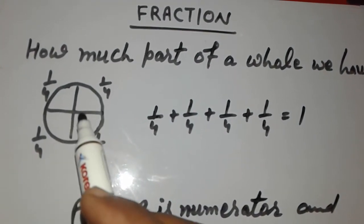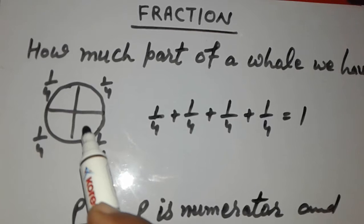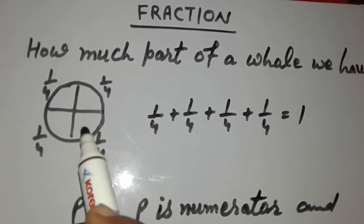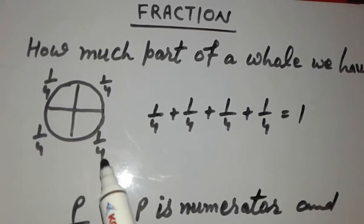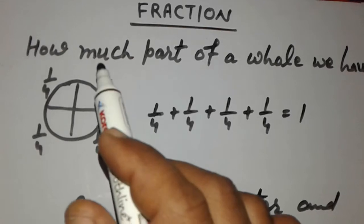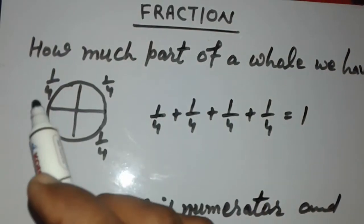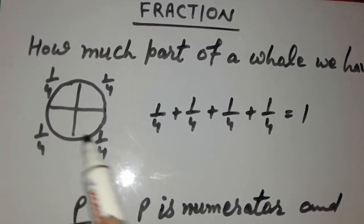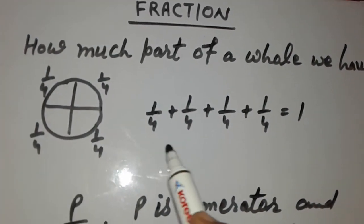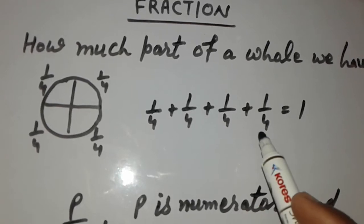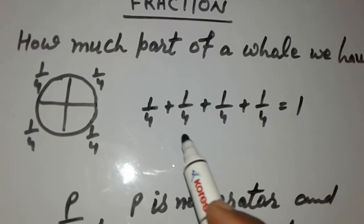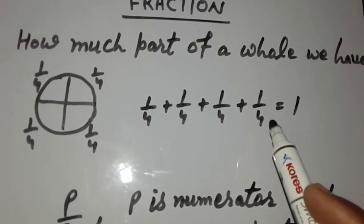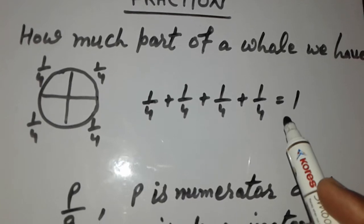four equal pieces, then each piece can be written as one by four. And if we add these four pieces then it completes the bread — one again.